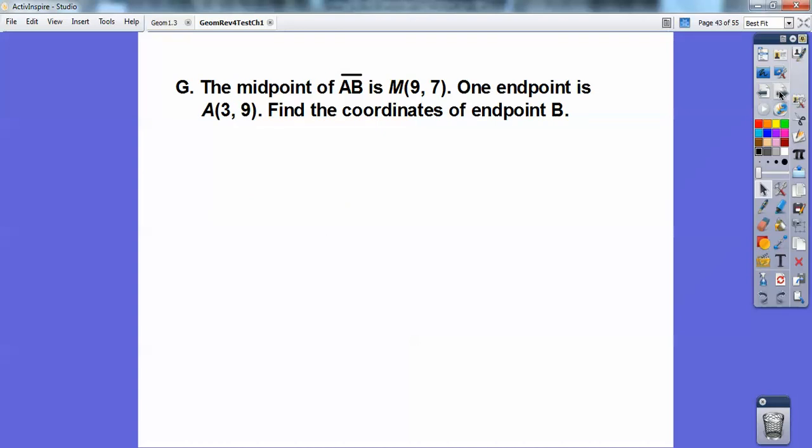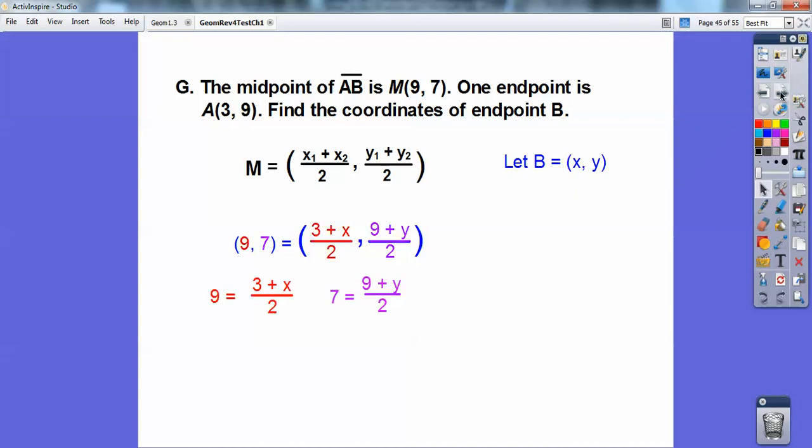The midpoint of AB is (9, 7). One endpoint is (3, 9). Find the coordinates of the other endpoint. We did this on section 1.3. So I just let that midpoint, (9, 7), equal to these two guys right here. Then this 3 plus X over 2 represents the 9, and the 9 plus Y over 2 represents the 7. So when we solve, we should get (15, 5).